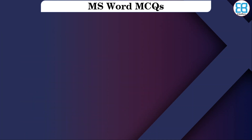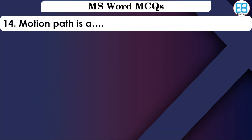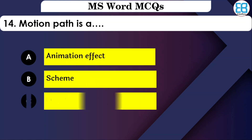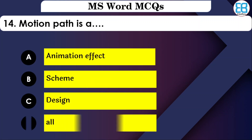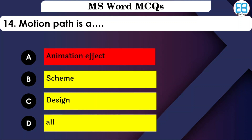Motion path belongs to which category? The options are: Animation Effect, Scene, or Design. The correct option is Animation Effect — Motion Path is found under Animation Effects.